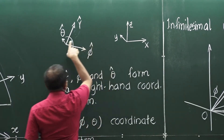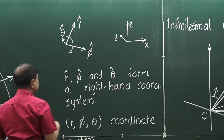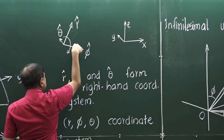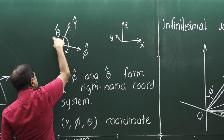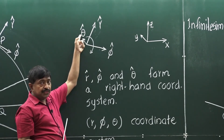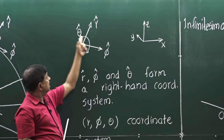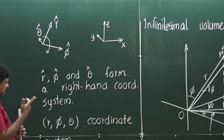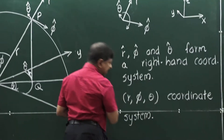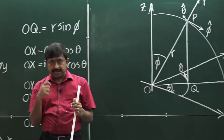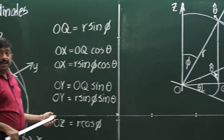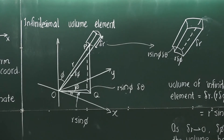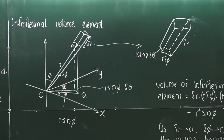Here it is rotated, but r hat is in the direction of the first coordinate. If you take this as the first coordinate, this as the second, and rotate a screwdriver in this direction, the head moves in the direction of theta hat. Therefore, r is the first coordinate, phi is the second, and theta is the third. To solve problems you don't need this, but to understand the coordinate system you need that orientation. Now we will move to the infinitesimal volume element.